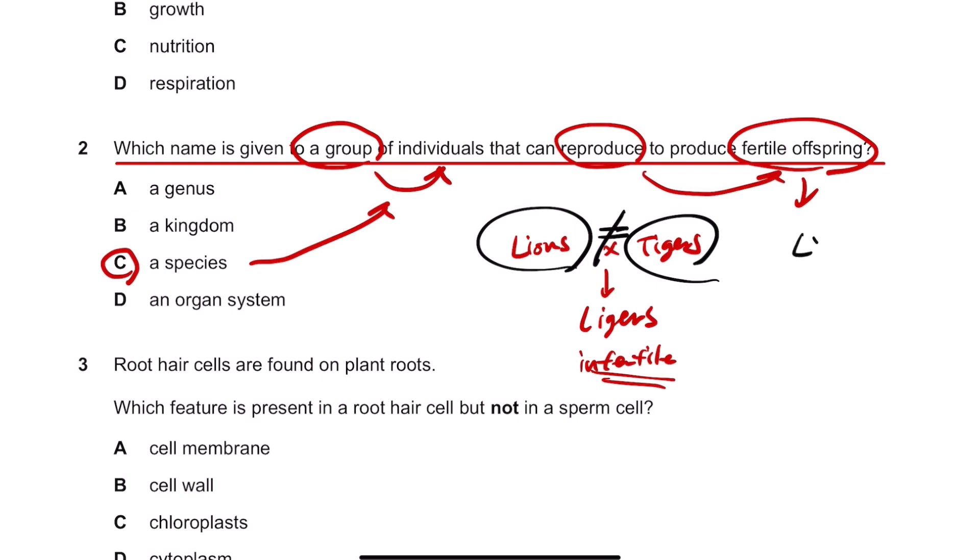However, if lions are mated with other, not ligers, lions, then they'll give birth to the lioness, not lioness, lions, lion cubs.